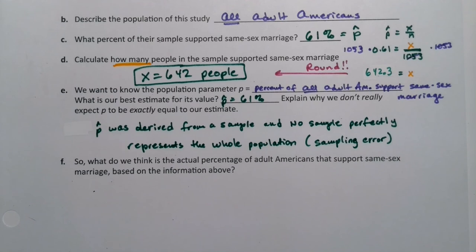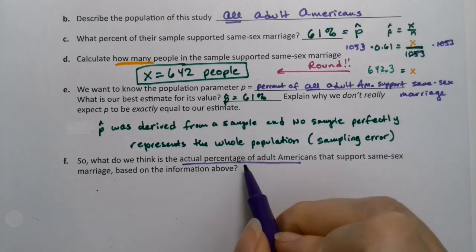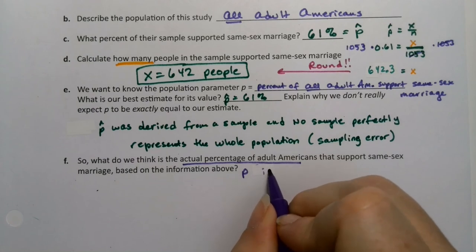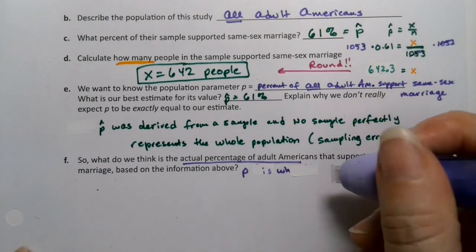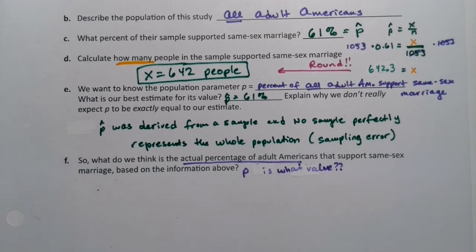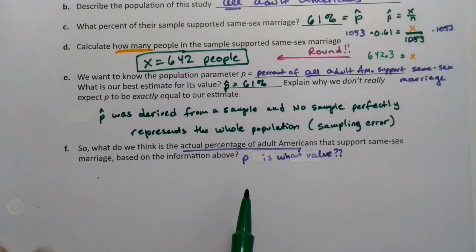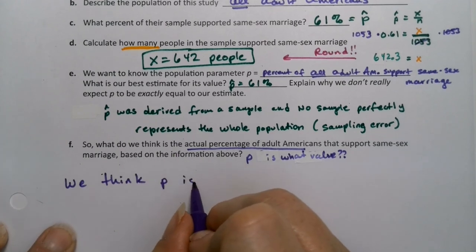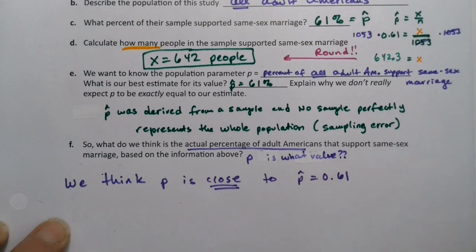So what do we think is the actual percentage of all adult Americans? Where do we think P is? The answer is we don't know for sure, but we think it's around 61%. Since the 61% was derived from a nice random sample and a good-sized one at 1,053, we think it should be close to there. We think P is close to P hat, or 61%.